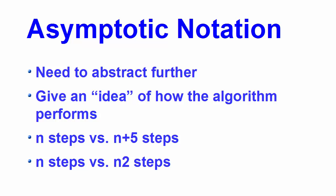Asymptotic analysis of an algorithm refers to defining the mathematical foundation of its runtime performance. In the next video we will learn the details about asymptotic notations — Big-O notation, Big-Theta notation, and Big-Omega notation — what these notations are and how we can use them. Stay tuned and I will see you in the next video.